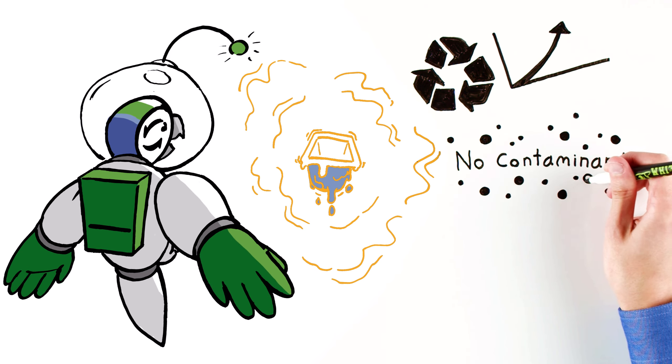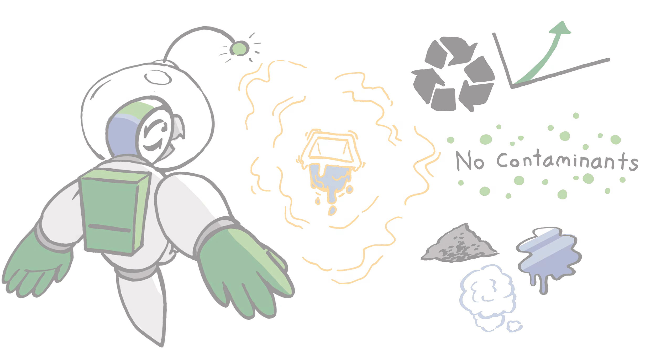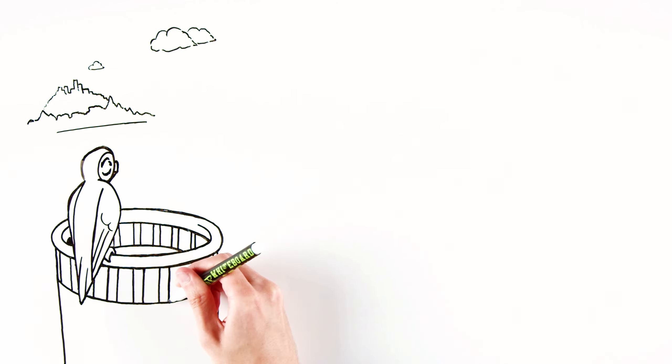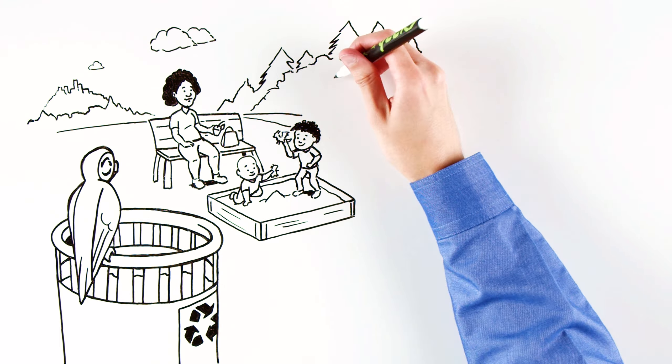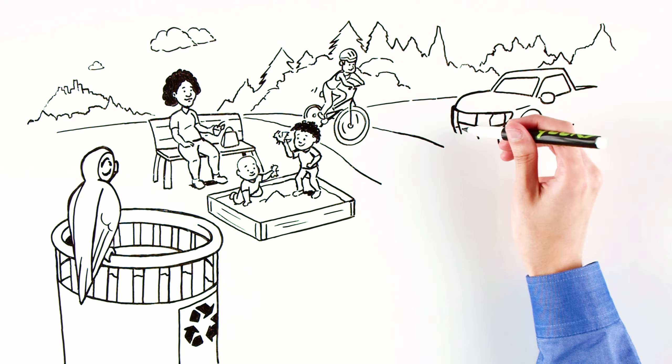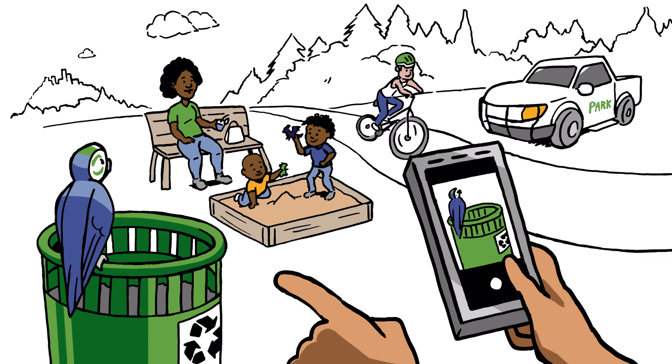What's more, pyrolysis yields char, pyrolysis oil, and syngas that are valuable raw materials. That yogurt cup that Polly recycled at the park can now be remade into not only another yogurt cup, but also a toy, a bicycle helmet, parts for a car, or a phone.